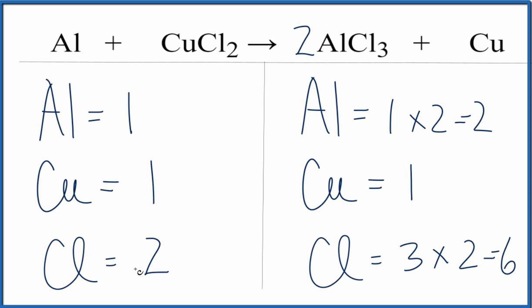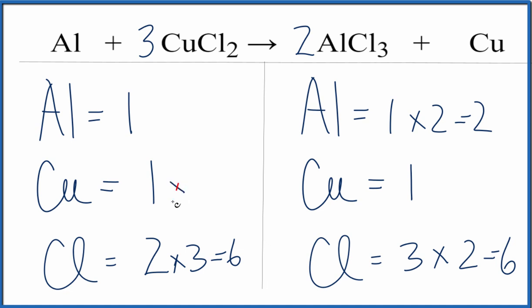Over here on the reactant side, if I want to balance the chlorines, I can just put a 3 in front of this. 2 times 3 gives me 6, and 1 times 3 gives me 3 chlorines.